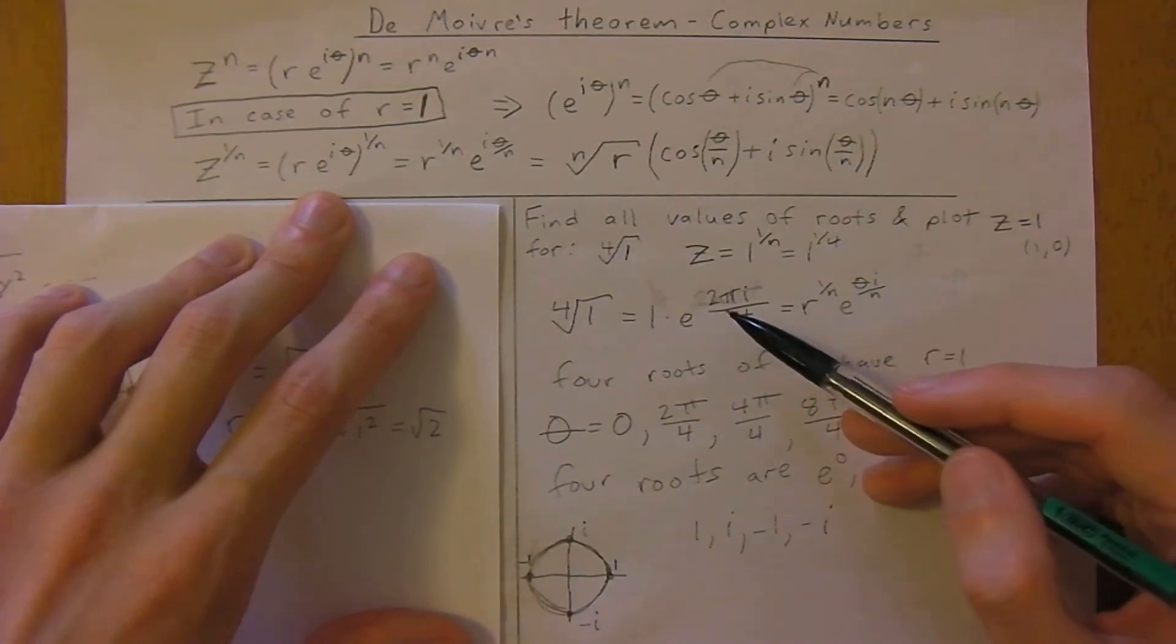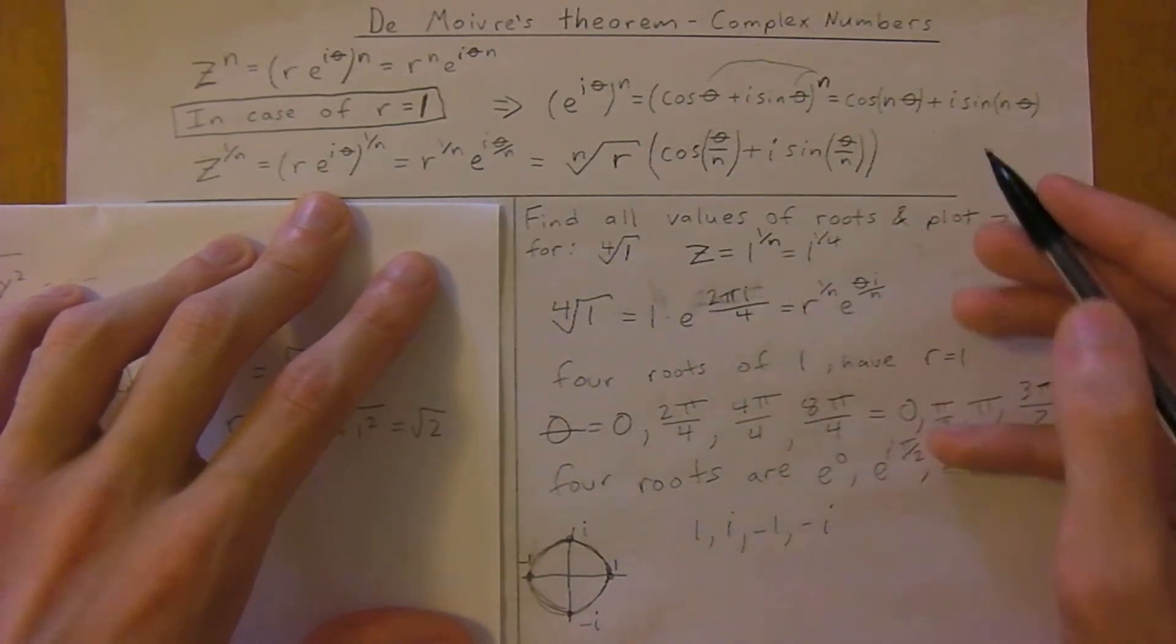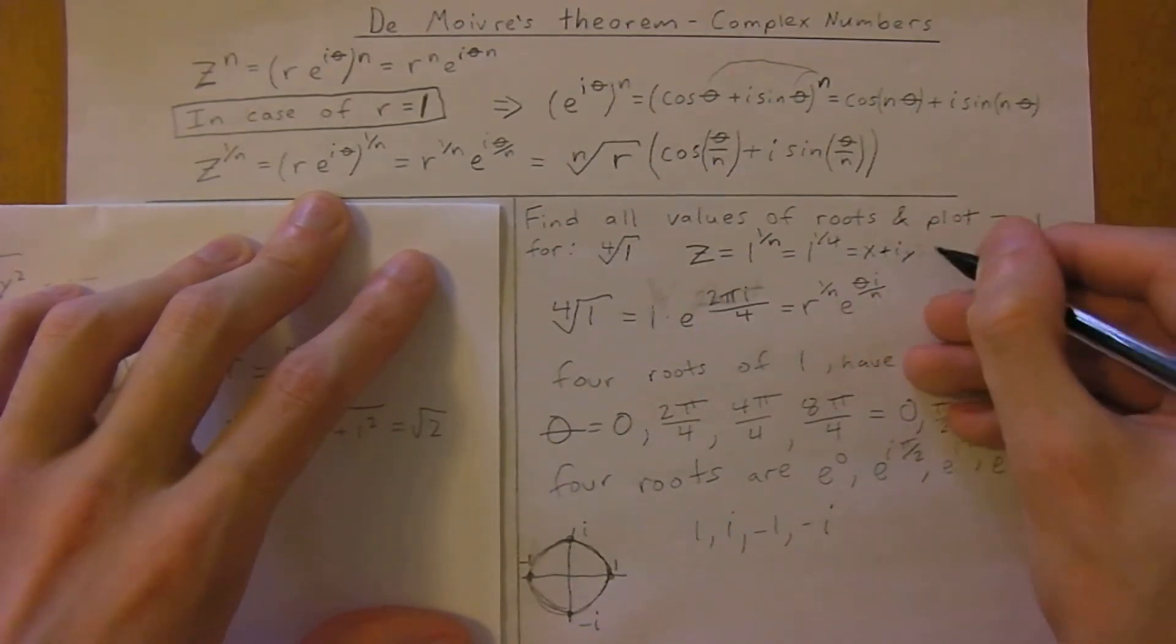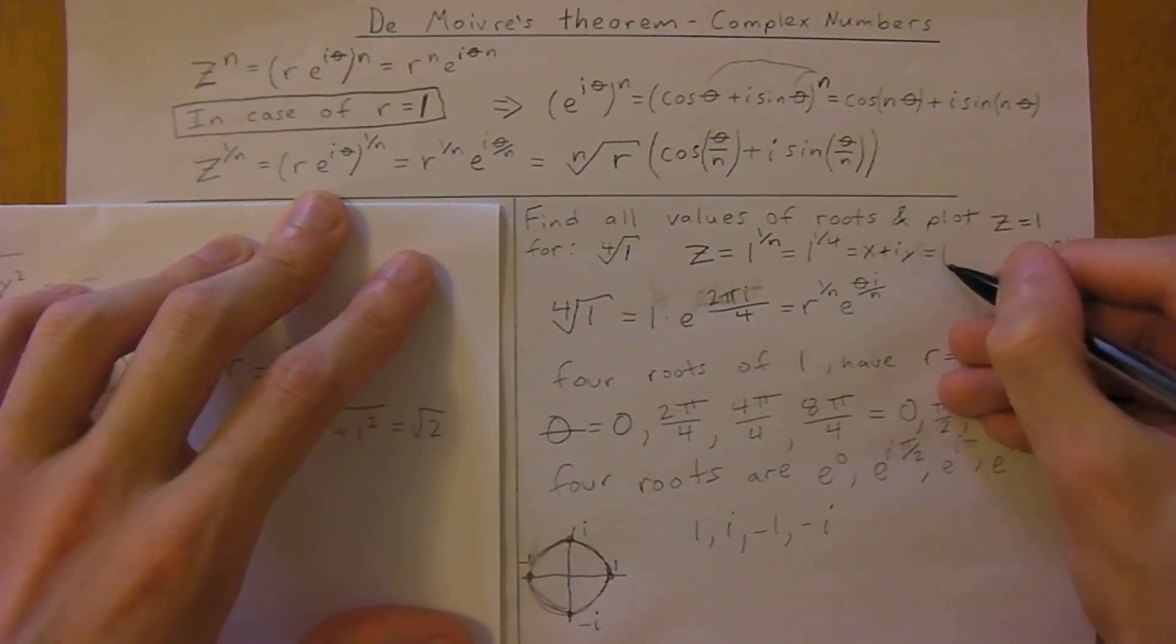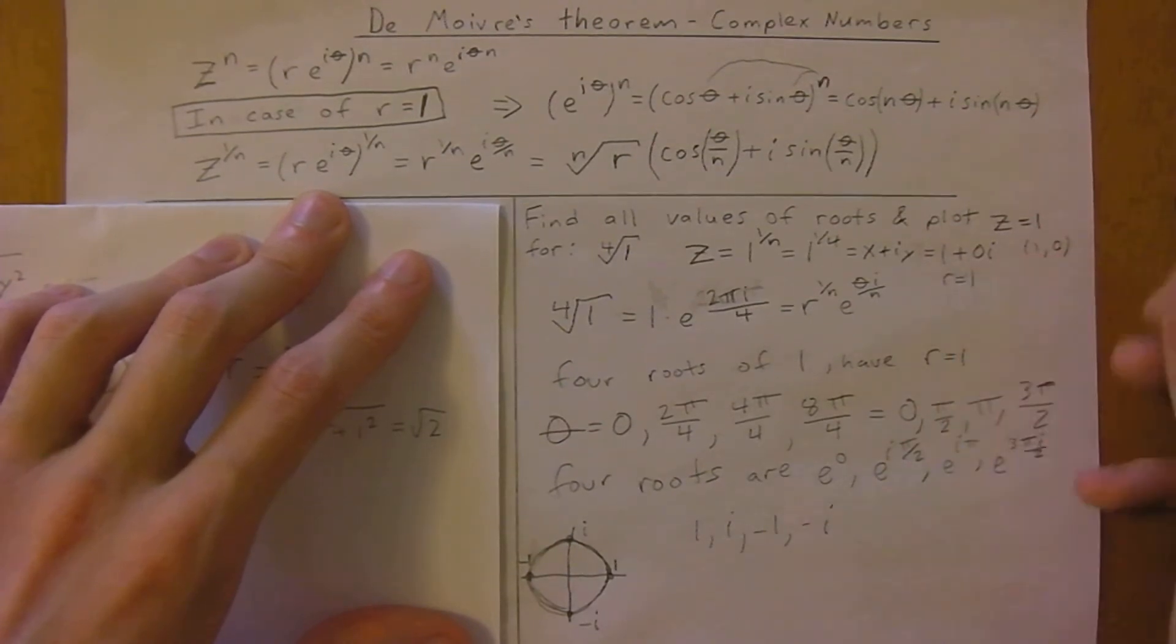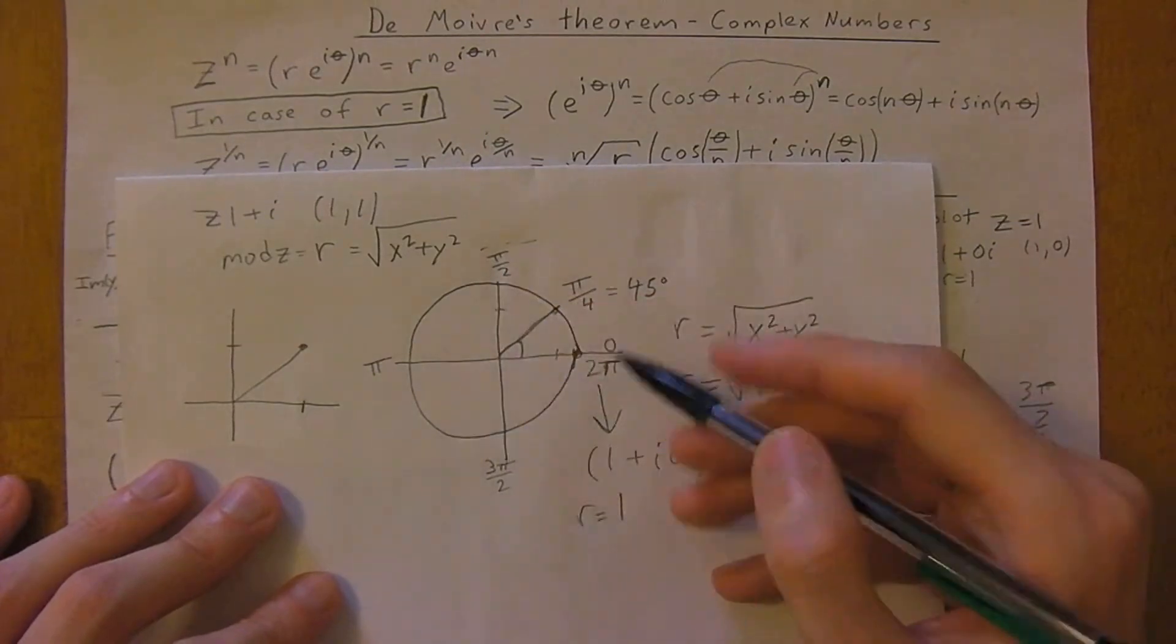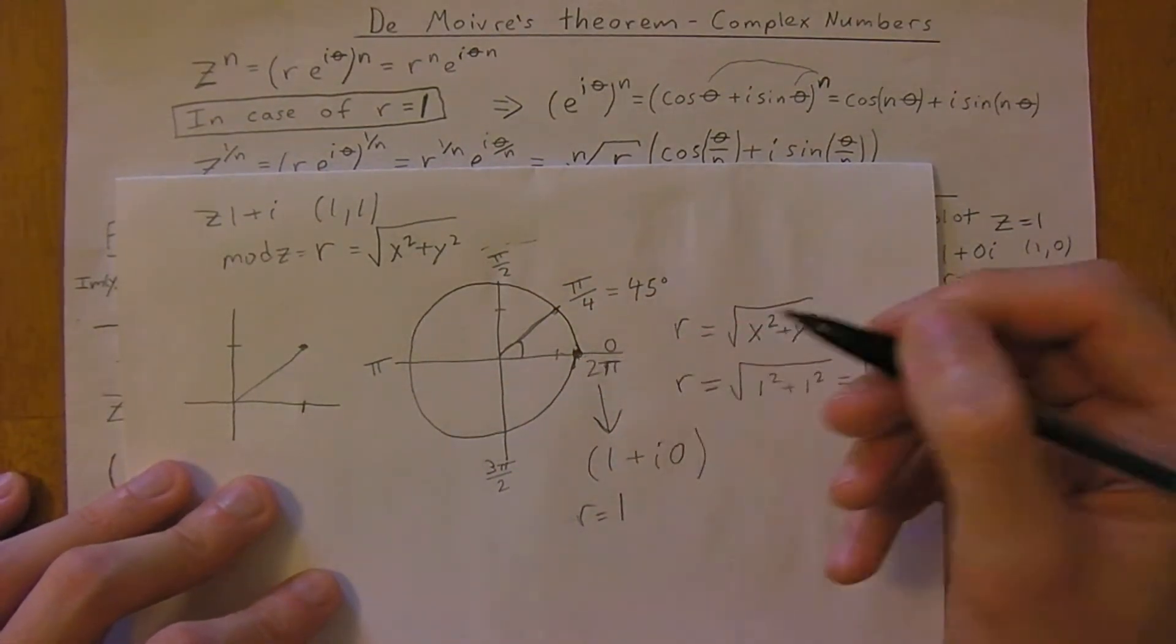Times e to the 2 pi i divided by 4. In this case, we're given z. So z is the same as x plus i y, which is our point 1 plus 0i. It's just going to be around 2 pi, we've got this point 1, 0, which has a radius of 1.